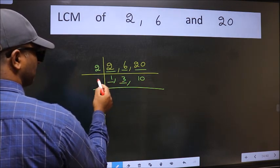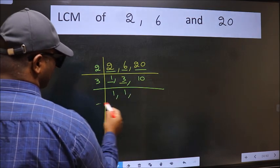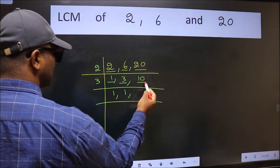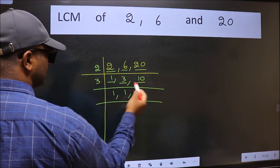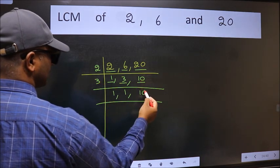3 is a prime number so 3, 1 is 3. The other number 10, not divisible by 3. So we write it down as it is.